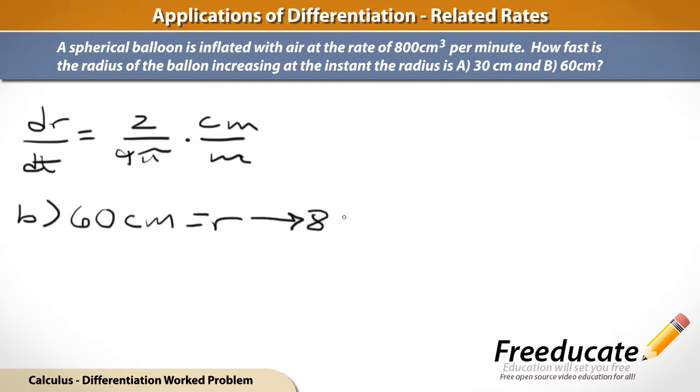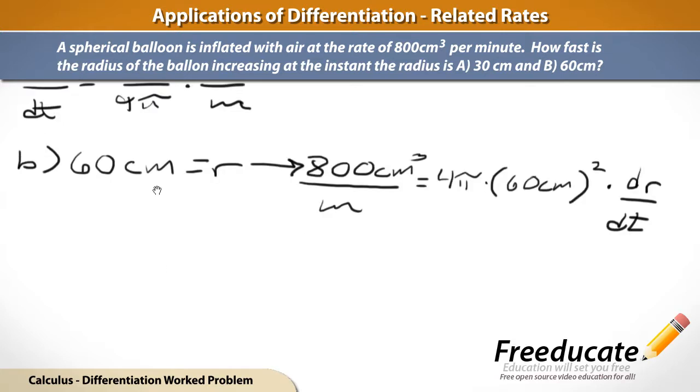So, we know that dV/dt is, again, just 800 cubic centimeters per minute. And that equals 4 pi times r squared. But remember, r is now going to be 60 centimeters. So, times 60 centimeters. That quantity squared times dr/dt. Okay. So, it's pretty simple at this point. Just square some stuff out, divide through a little bit, and you get your rate.